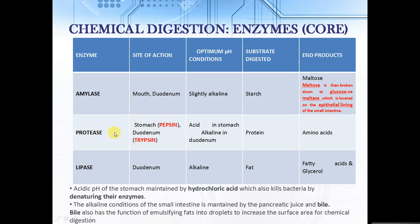Secondly, we've got protease, which you can find in the stomach. The protease in the stomach we call pepsin, and the protease in the duodenum is what we call trypsin. The conditions they prefer in the stomach is acidic, and alkaline in the duodenum. Protease is an enzyme that breaks down protein into amino acids. The last one is lipase, which you find in the duodenum from the pancreatic juice, and they prefer alkaline conditions too. Their role is to digest fat into fatty acids and glycerol. The acidic conditions in the stomach are maintained by hydrochloric acid, which also has the function of killing bacteria by denaturing the bacterial enzymes.